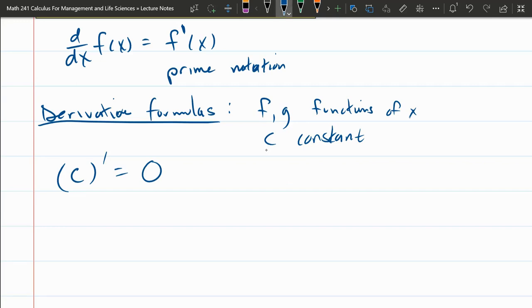Next up, derivative of a polynomial, x to the n power derivative. You bring the n in front as a coefficient, and you subtract one from the power. So the power went from n to n minus one, and you multiply by that power.